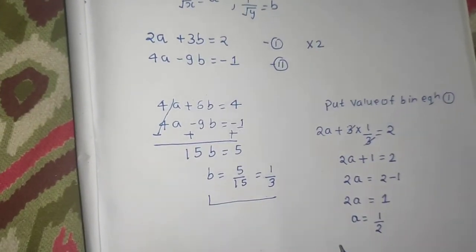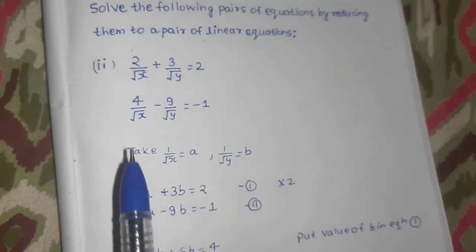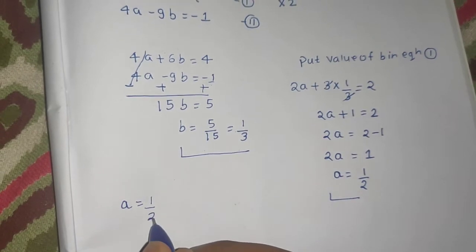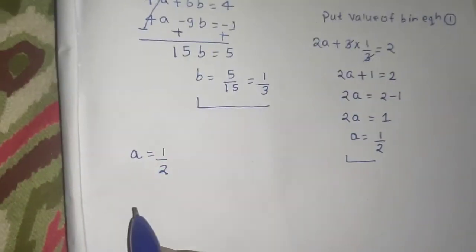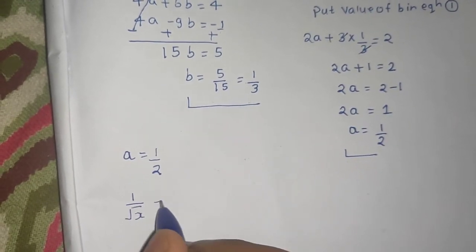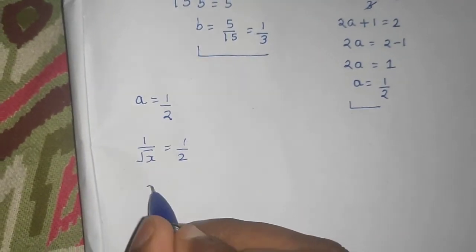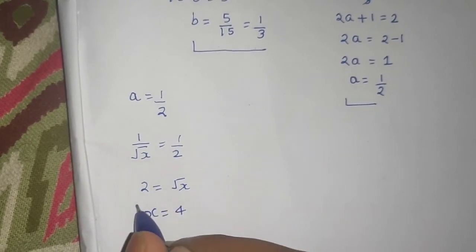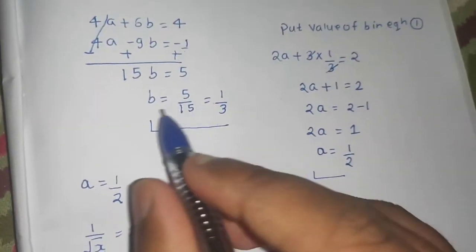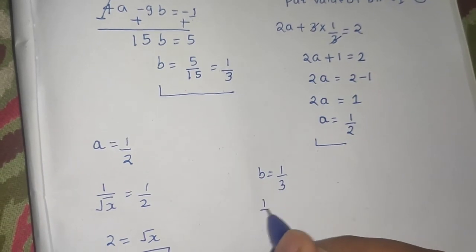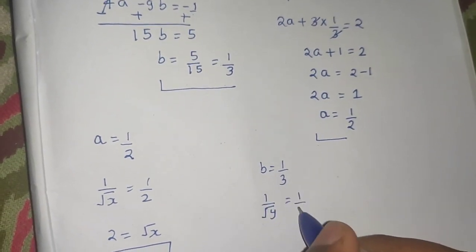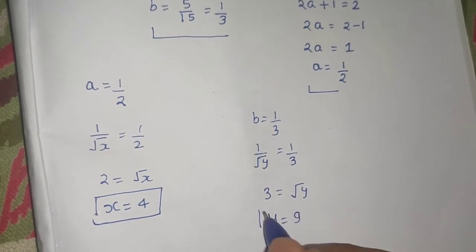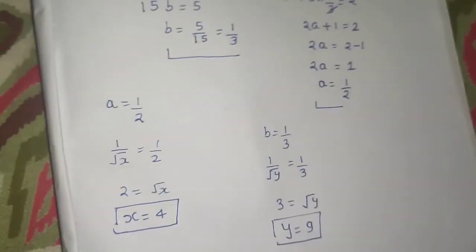We have the values of a and b, but we need x and y. Since a = 1/√x and a = 1/2, cross-multiplying gives √x = 2, and squaring both sides gives x = 4. Since b = 1/√y and b = 1/3, cross-multiplying gives √y = 3, and squaring both sides gives y = 9.